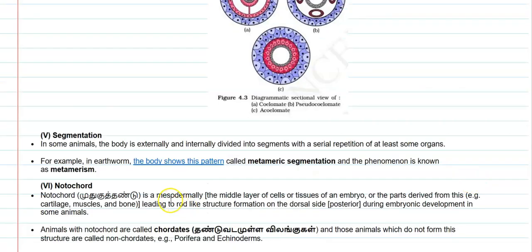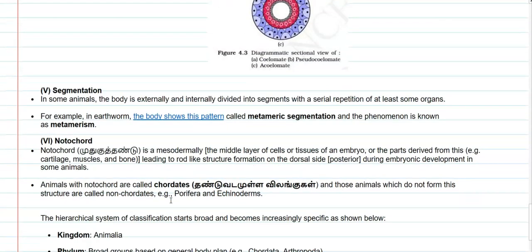The next parameter is segmentation. In some animals, the body is externally or internally divided into segments with a serial repetition of at least some organs in those particular segments. The example here is the earthworm. Its body shows this pattern, which is referred to as metameric segmentation, and this phenomenon is technically referred to as metamerism.